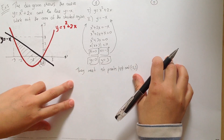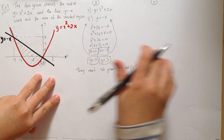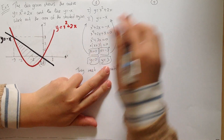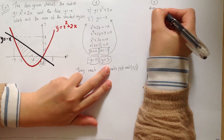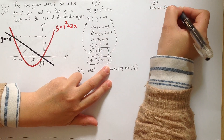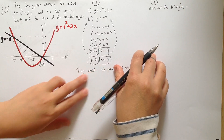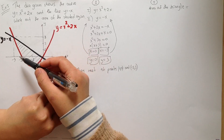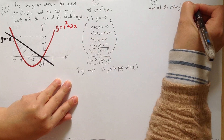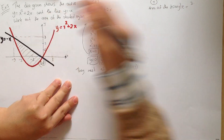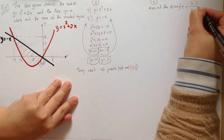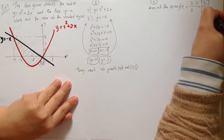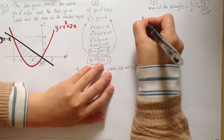The second step: I have to find the area of the triangle. We have a right triangle, so area of the right triangle equals base times height over 2. In this case, the base is 3 and the height is also 3, so we get 3 times 3 over 2, which equals 9 over 2.